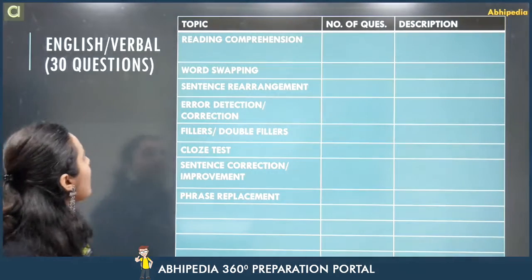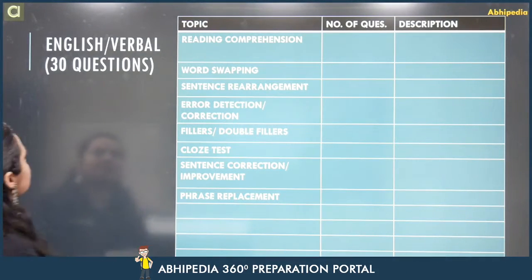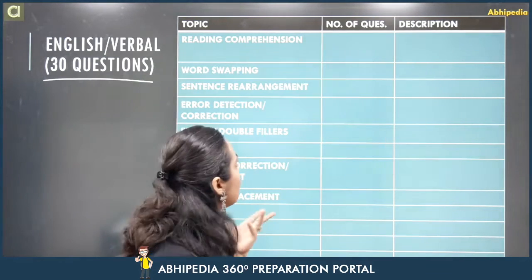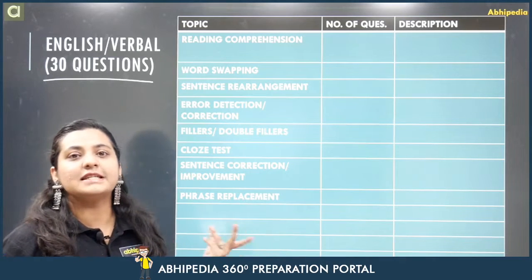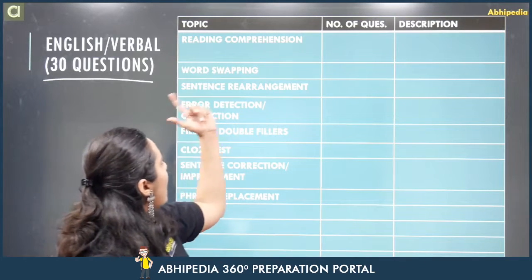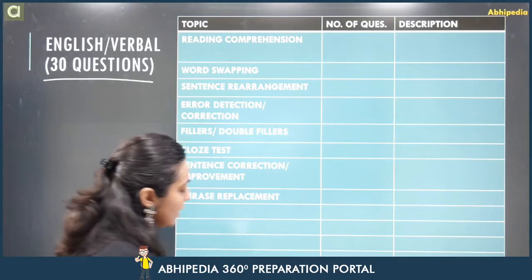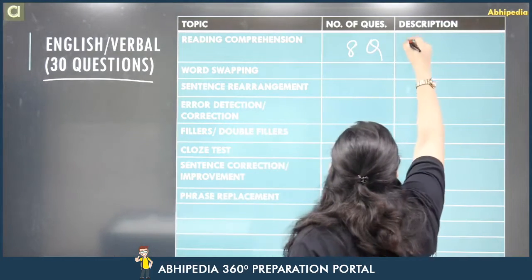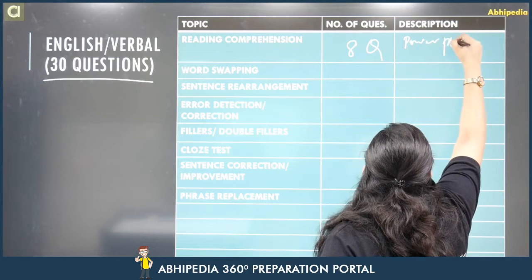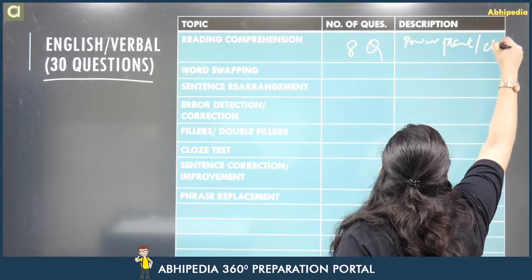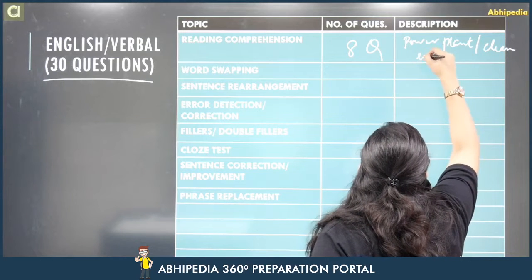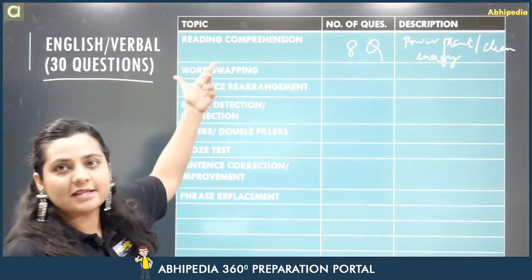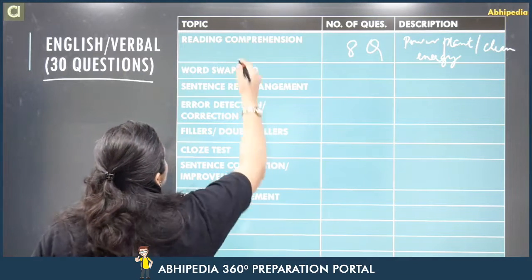Sabse pehle hum log start karte hain aapke verbal section se — 30 questions, as always. The interface is more or less the same, no major changes. RC mein aapke eight questions were there and the topic was power plants and clean energy — again a very editorial topic, as discussed yesterday. Maine bola tha ki aisa hi koi milta julta topic aayega.